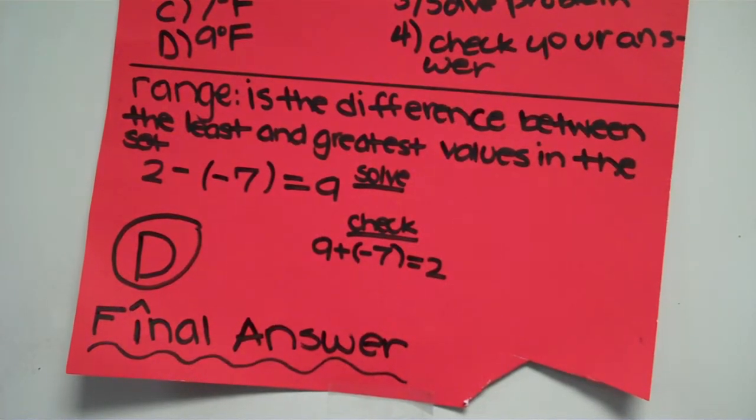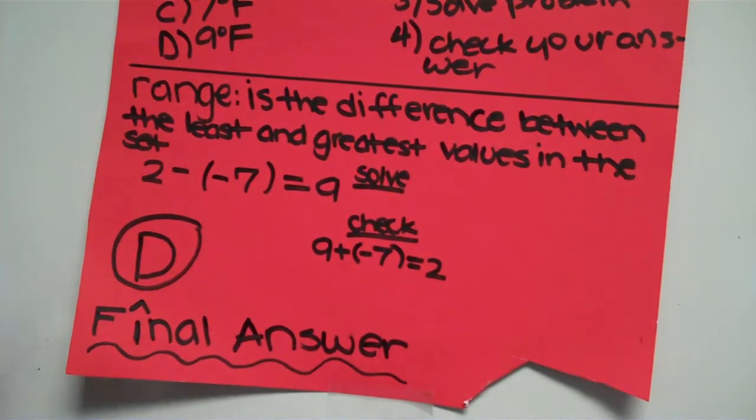Now you want to check your answer. So I did 9 plus negative 7 equals 2. And my final answer would be D.